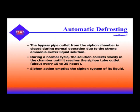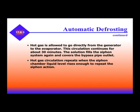The bypass outlet in automatic defrost from the siphon chamber is closed during normal operation due to the strong ammonia-water liquid solution. During normal cycle, the solution collects slowly in the chamber until it reaches the siphon tube outlet. The siphon action empties the siphon system of its liquid. Hot gas is then allowed to go directly from the generator to the evaporator for about 30 minutes. The solution fills the siphon system again and covers the bypass pipe outlet. Hot gas circulation repeats when the siphon chamber liquid level rises enough to repeat the siphon action. In other words, no electromagnetic valves are needed — it's all based on the level of the solution in the siphon chamber.